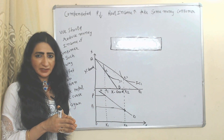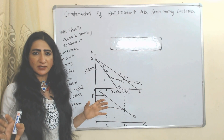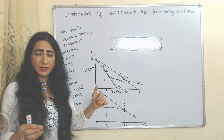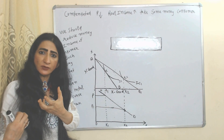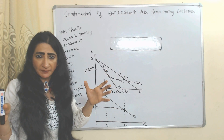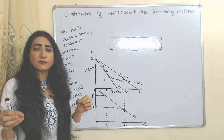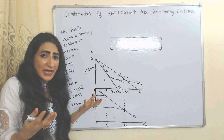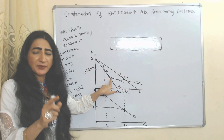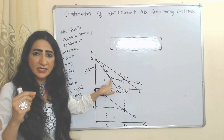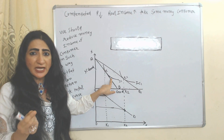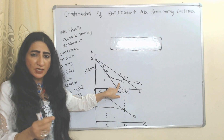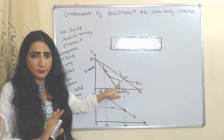Now we are going to talk about the compensated demand curve, starting with Hicks' compensated demand curve. As we discussed earlier, when price falls we take some money from the consumer to keep their real income constant. According to Hicks, when price falls, we reduce the money income of the consumer in such a way that the consumer can return back to their initial indifference curve.